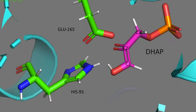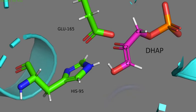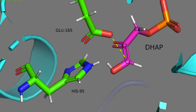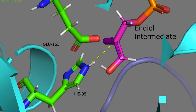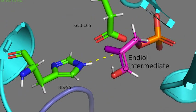First, glutamic acid-165 acts as a base and abstracts a proton from the C1 carbon of DHAP. Next, histidine-95 acts as a general acid and donates a proton to the C2 carbonyl oxygen, and what is called an endiol intermediate is formed.